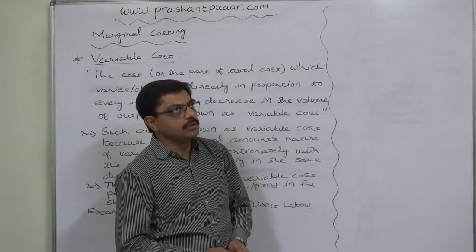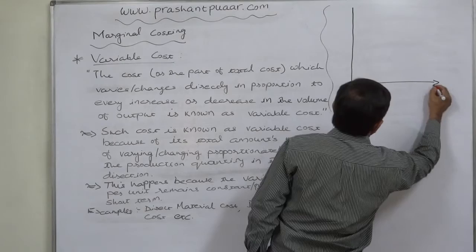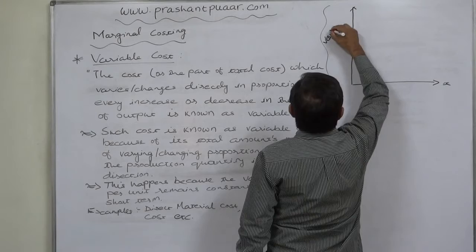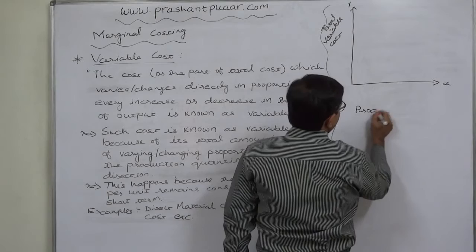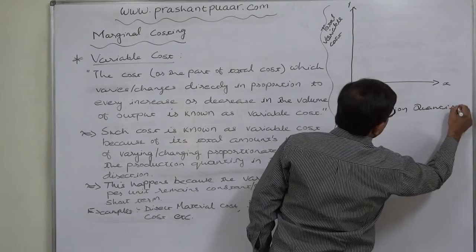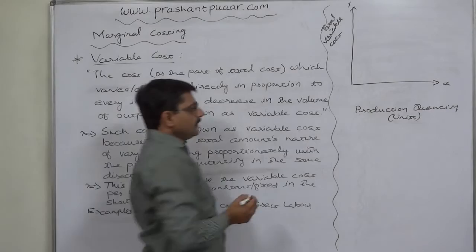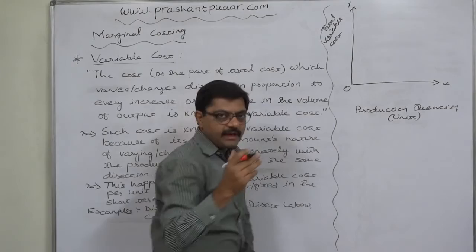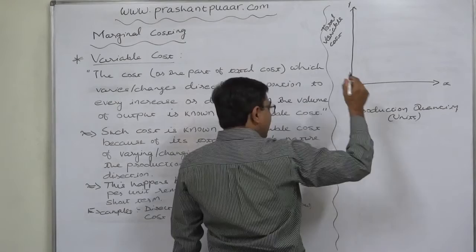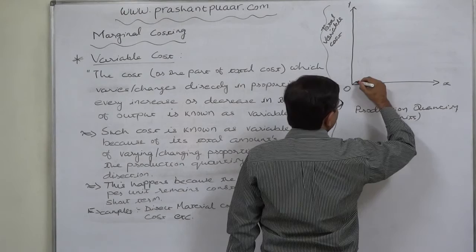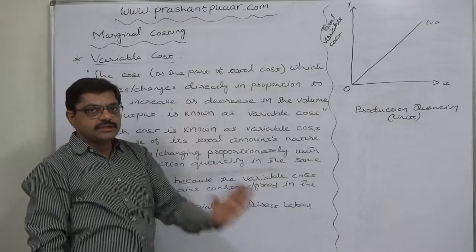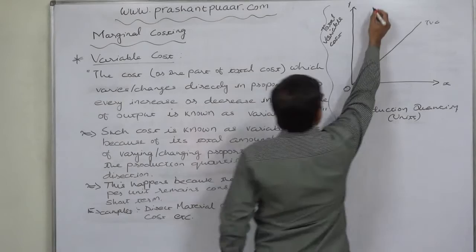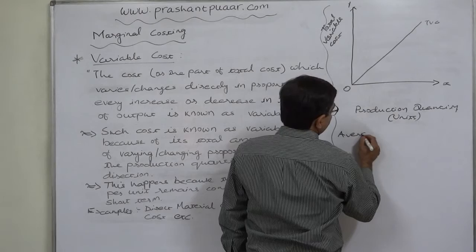More precisely, if we take total cost as the dependent variable on the Y-axis and production quantity or output — that is, number of units — on the X-axis, because it is directly dependent on the quantity, the behavior will be: at zero level of activity, if we do not produce any article, it remains zero, and ultimately with increase in production, the total variable cost will also increase. At zero level of production, the amount of variable cost is zero — no production means no variable cost. This is the graphical presentation of total variable cost.